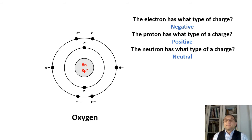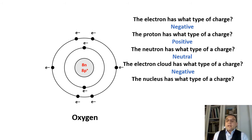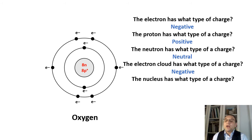The electron cloud has what type of charge? Think about what the electron cloud is made of. The charge will be negative, because the electron cloud is made of electrons. The next question: what type of charge is the nucleus? The nucleus is made of neutrons and protons. Neutrons are neutral and protons are positive. Therefore, the nucleus carries a positive charge.